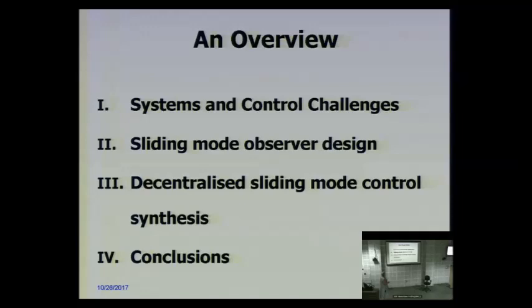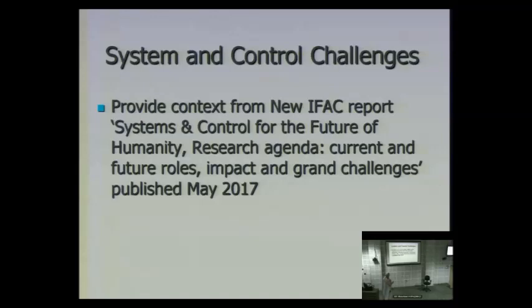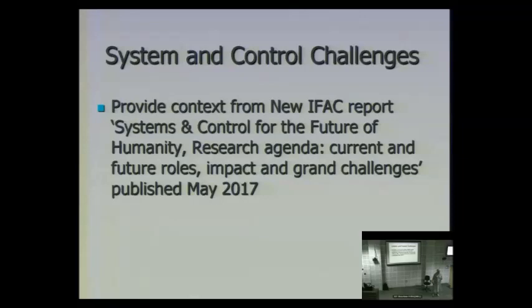The IFAC report was called 'Systems and Control for the Future of Humanity: Research Agenda, Current and Future Roles, Impact and Grand Challenges.' It had literally been worked on for three years. Within IFAC we work in trienniums — three-year periods — and the president who took over in 2014 set this as one of the objectives he wanted achieved in his presidency.